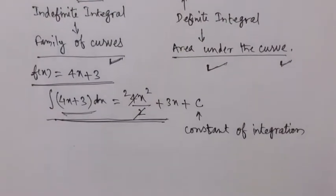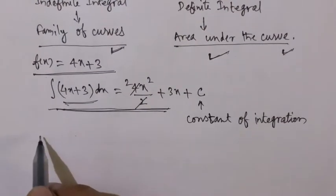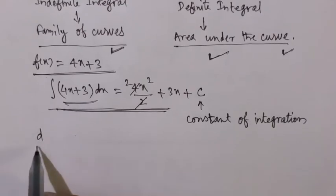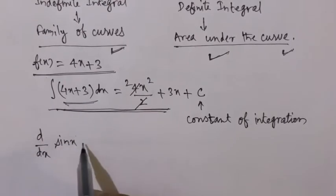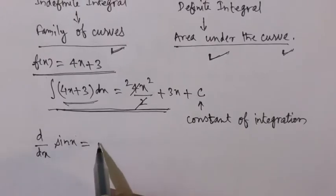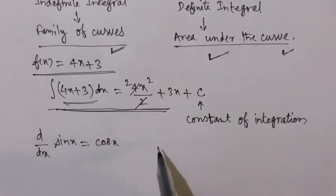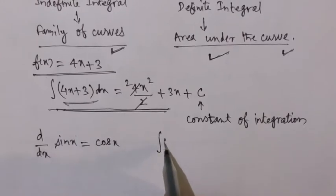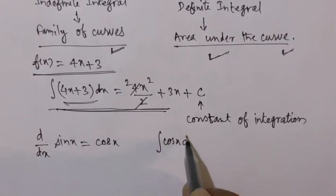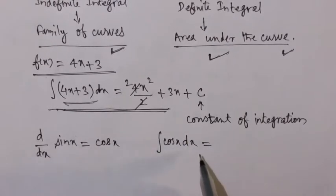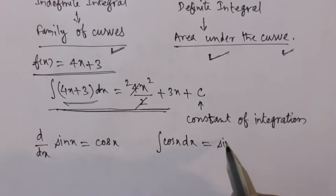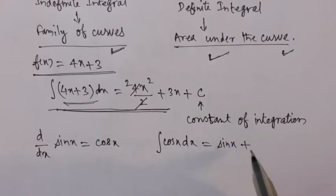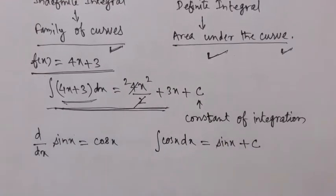d/dx of sin x gives cos x. So if you have the integration of cos x with respect to x, you get sin x. And for indefinite integration we always add plus c.